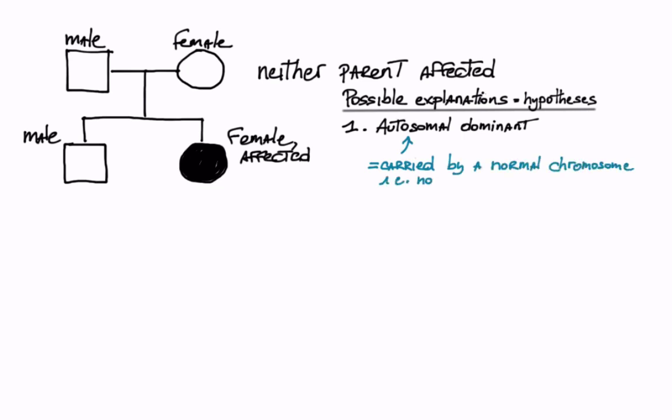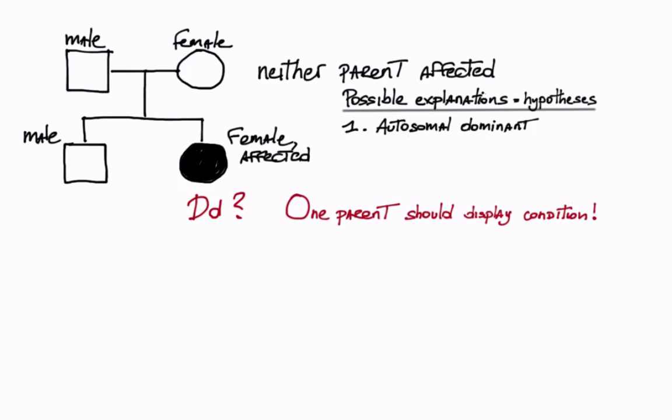Let's hypothesize that the affected individual has a big D little d genotype. It follows that at least one parent should carry a big D allele and display the same condition. Thus we can rule out this explanation. The next hypothesis is autosomal recessive.